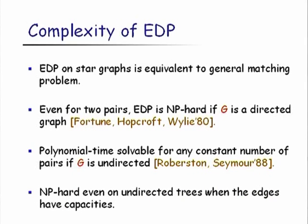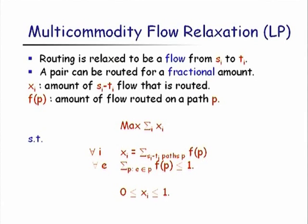Even on undirected trees, if edges have capacities, the problem is NP-hard. In this talk, we won't worry about capacities — we'll always assume all edges have unit capacity. Since the problem is intractable in general, there has been much work on designing approximation algorithms.